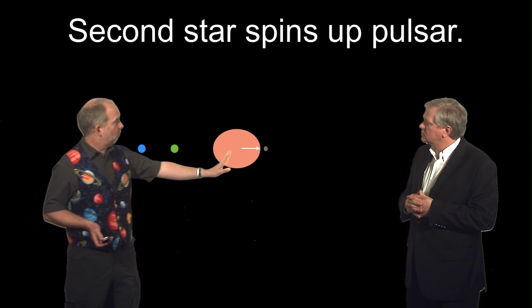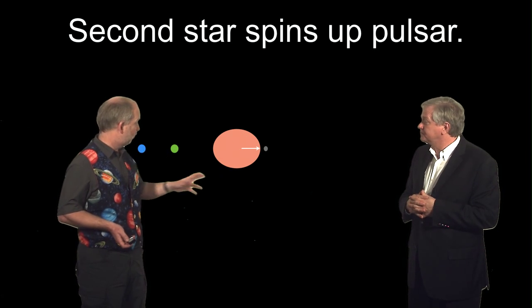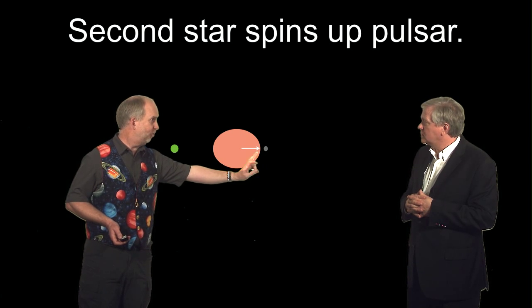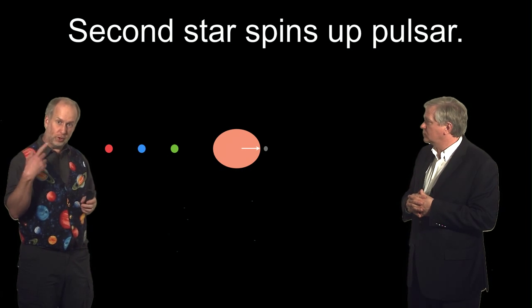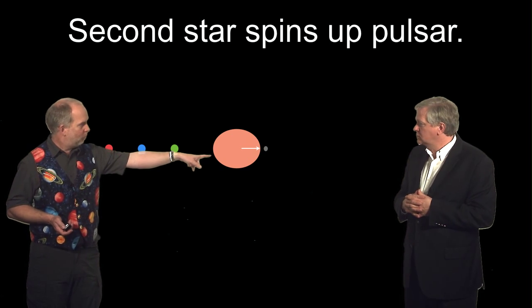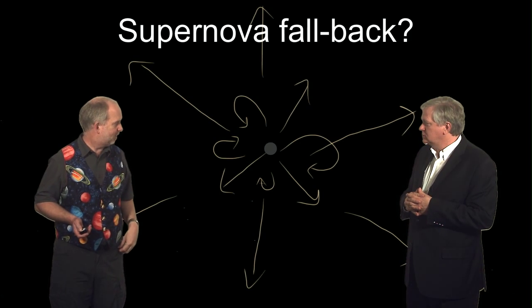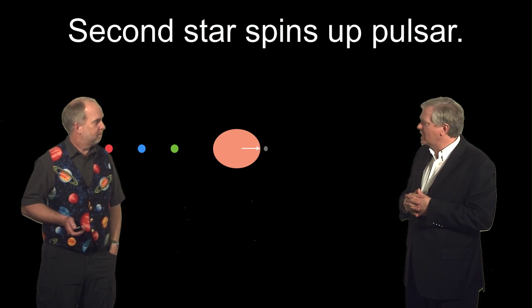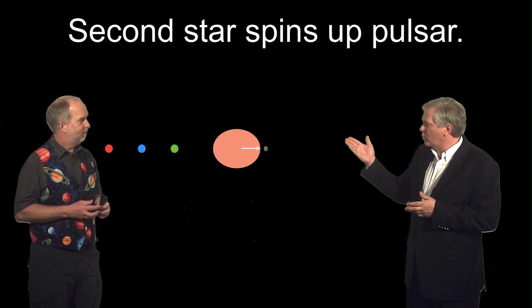But then the second star will swell up at some later stage, possibly engulfing the planets yet again and feeding matter onto the neutron star to make it into a millisecond pulsar. And that's another problem. Where's the remains of this? There should be a white dwarf left over. Where did that come from? So we really have a problem of where that star went to.